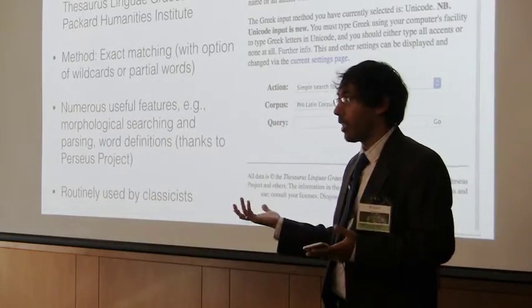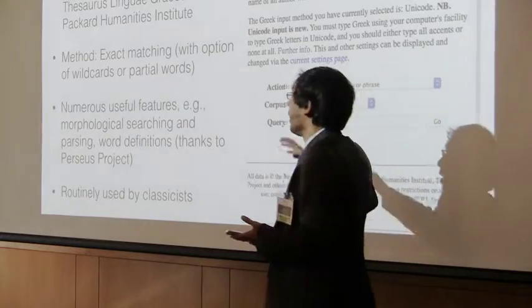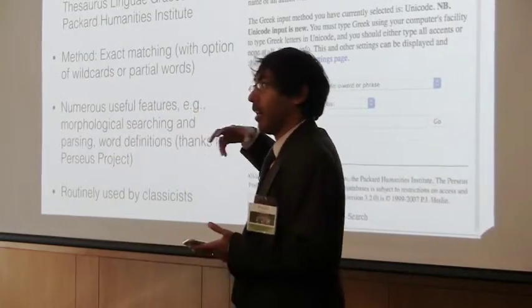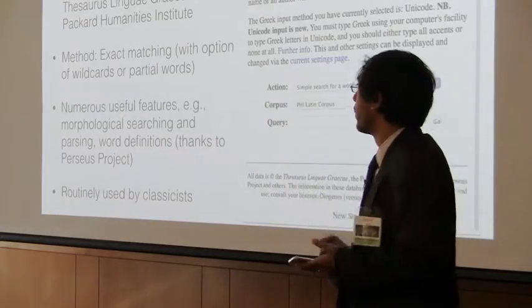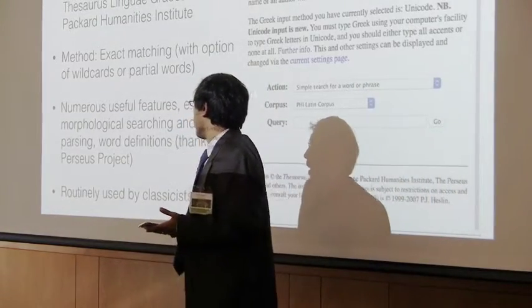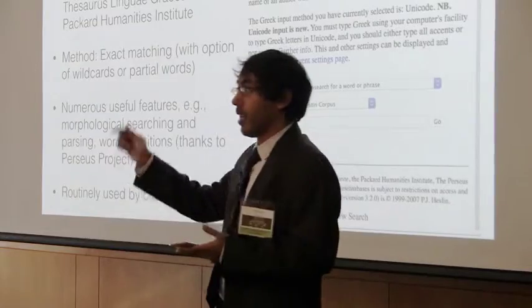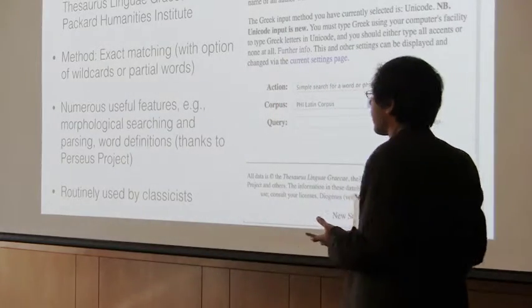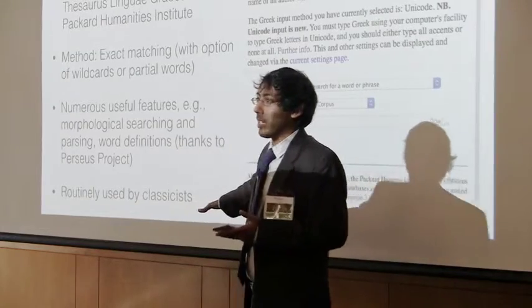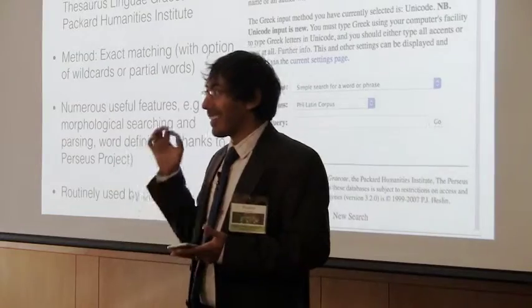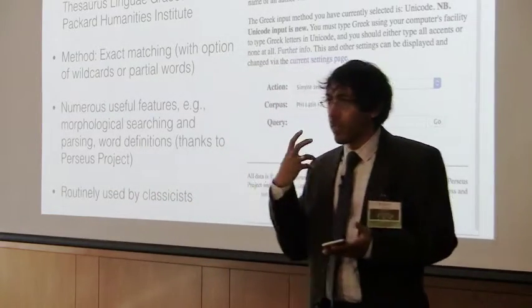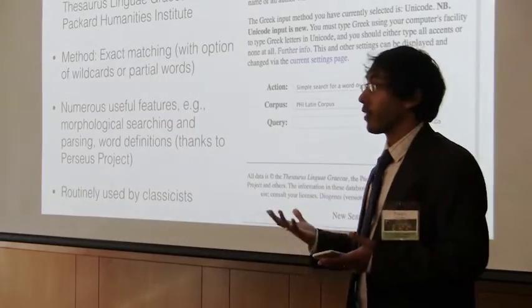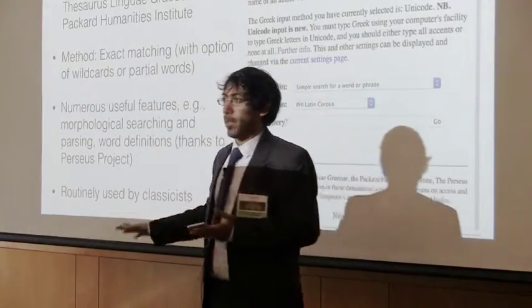The method is exact matching. This is key, because we're talking about ways of detecting similarities between texts. And already we've seen that sometimes these similarities are inexact or imprecise. Your options for flexibility include wild cards or partial words. It has numerous other useful features. When you click on a word, it gives you the definition drawn from the dictionaries provided by the Perseus project. And it's routinely used by classicists, many of whom, like me, have no particular technical background. And I cannot emphasize enough how important that is.